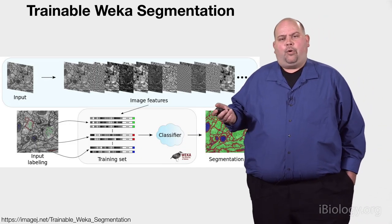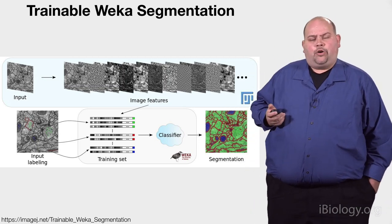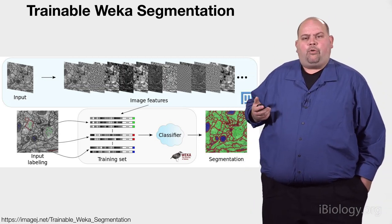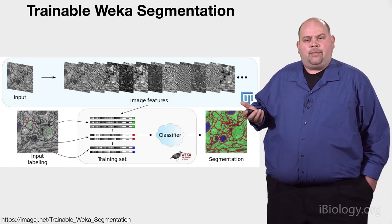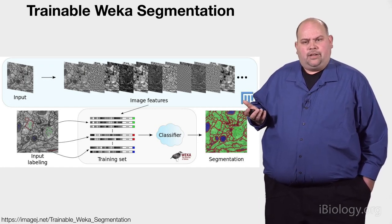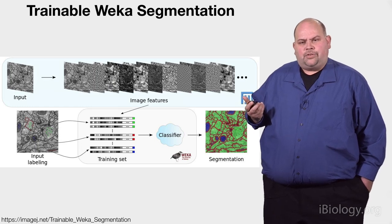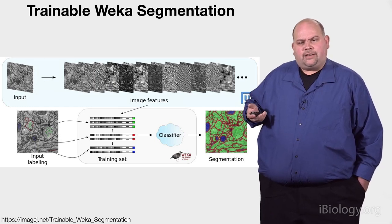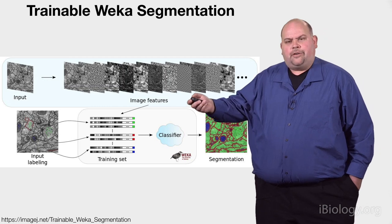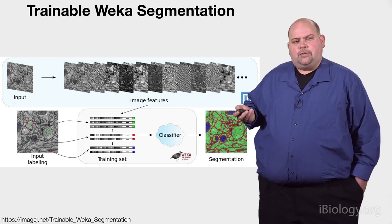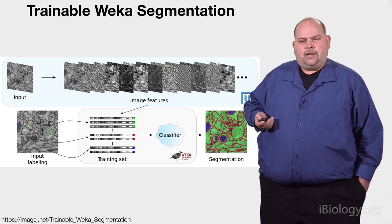One plugin I wanted to highlight is Trainable Weka. As my colleague Ann Carpenter discussed in her part on machine learning, it's very important to have machine learning-based methods. The Weka segmentation plugin provides a very user-friendly tool to integrate machine learning segmentation into your analysis workflow, and it has become very popular for doing automated segmentation in ImageJ.